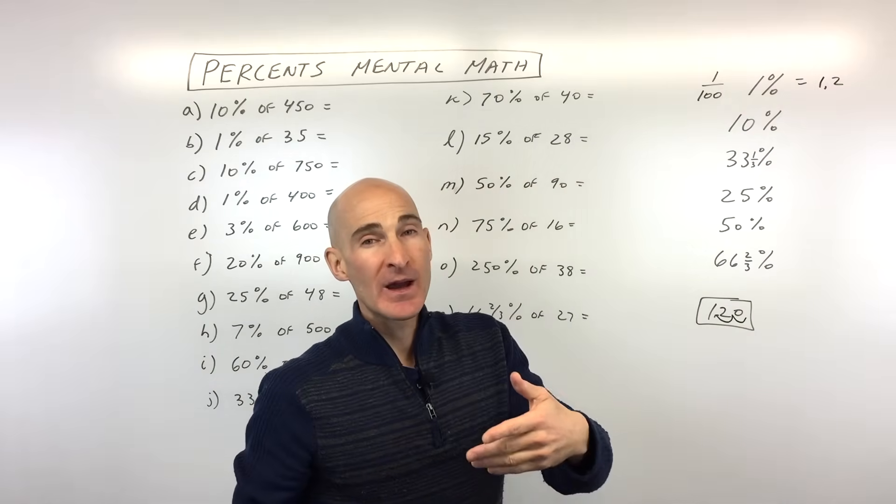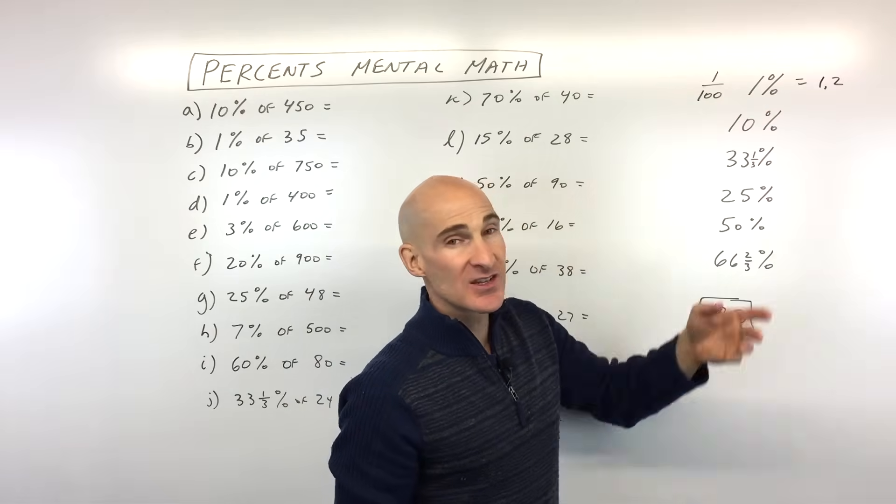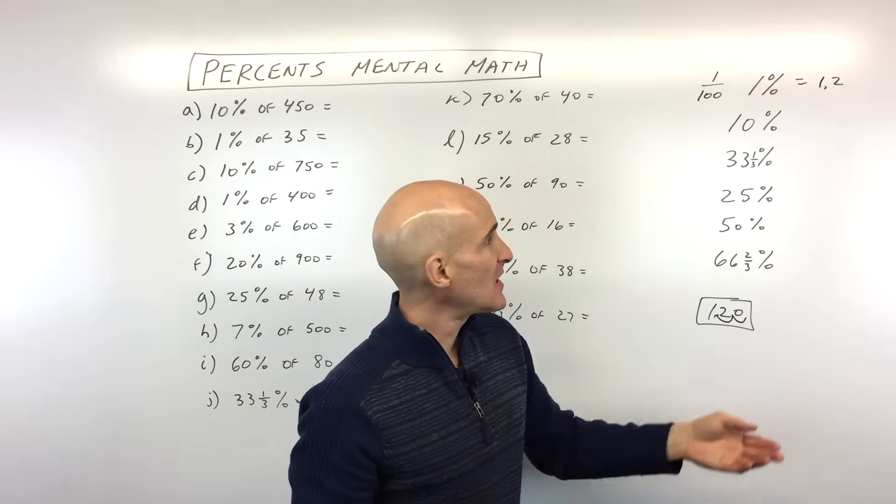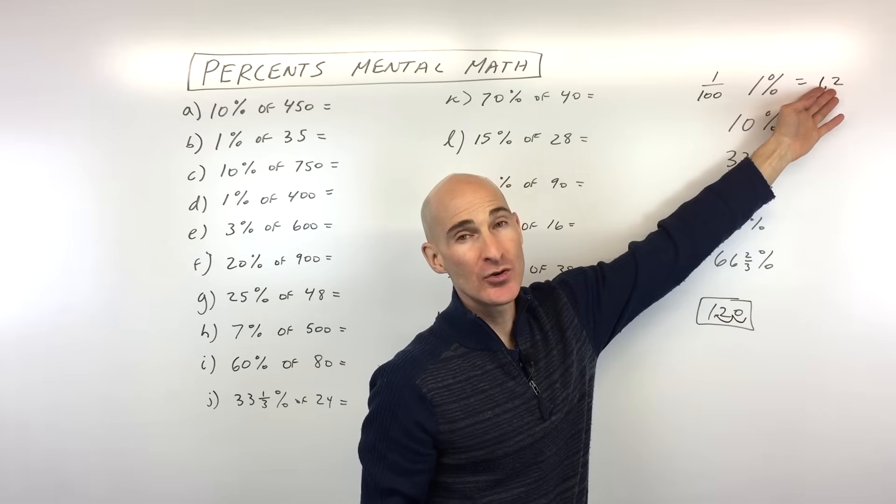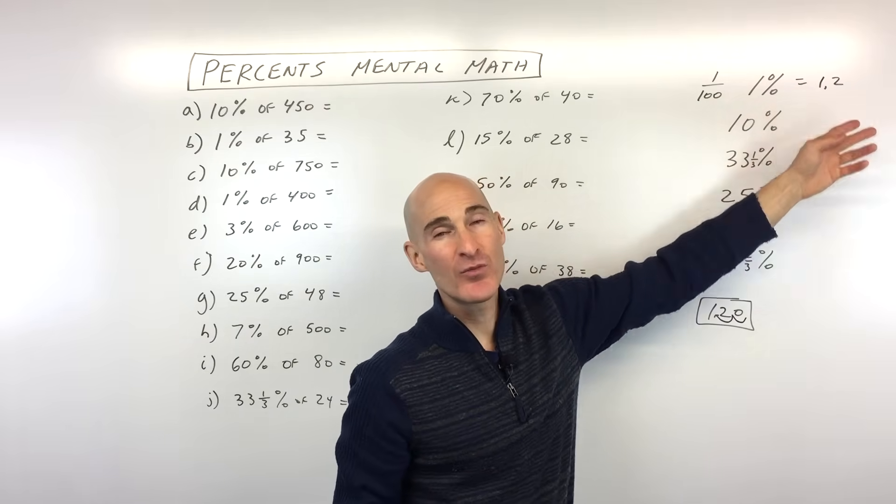Now say, for example, they wanted you to find two percent of 120. Well, we know what one percent is. Two percent is double, right? So we just have to take 1.2, multiply it by two, and we've got 2.4. Three percent, we just multiply it by three. That'd be 3.6, et cetera.